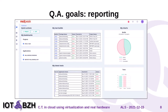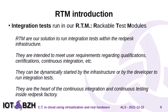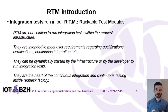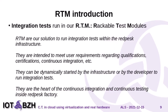A QA system needs to contain a continuous test system. At IoT.bzh, at the heart of our continuous testing system, we have the Rackable Test Modules. The Rackable Test Modules are solutions to run integration tests within the RedPESC infrastructure. They are intended to meet user requirements regarding qualifications, certifications, and continuous integration. They can be dynamically started by the infrastructure or by the developer to run integration tests.